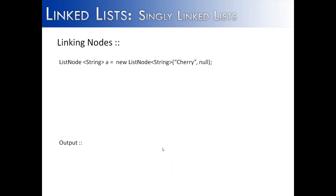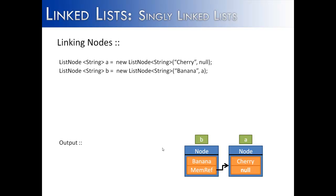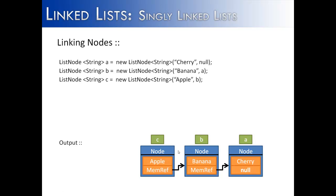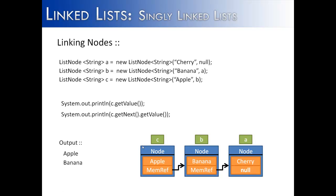Here's another way to create a linked list. It might seem backwards, but we assign each node a value. The first one created is node A — cherry — with null. Then node B — banana — references node A. Now the list starts with banana linking to cherry. Finally, node C — apple — references node B, which references node A, completing the linked list. To print, we start at node C and use C.getNext().getValue() and C.getNext().getNext().getValue().